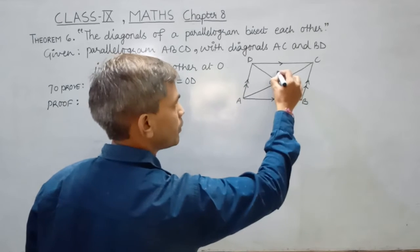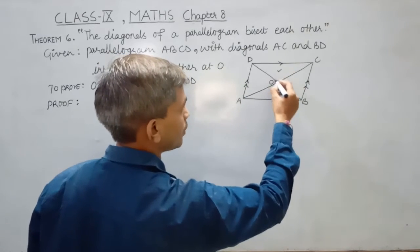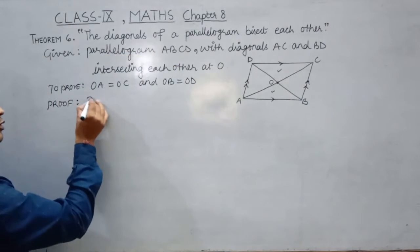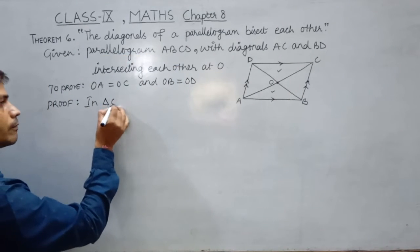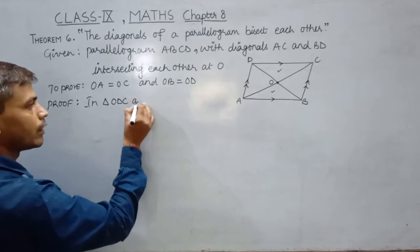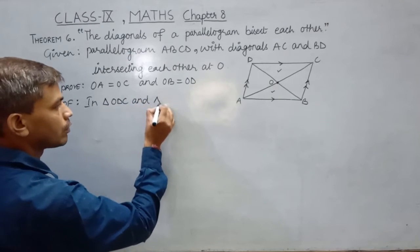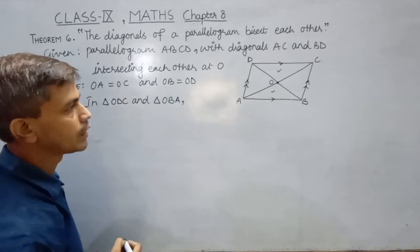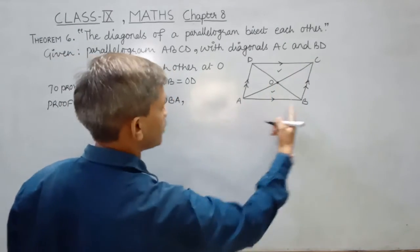So here we observe these two triangles: triangle ODC and triangle OBA. In those two triangles we have DC equal to AB.